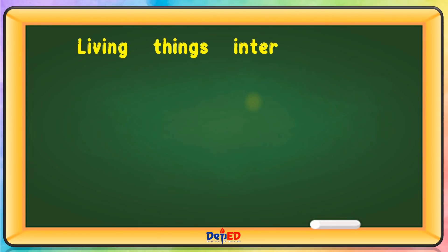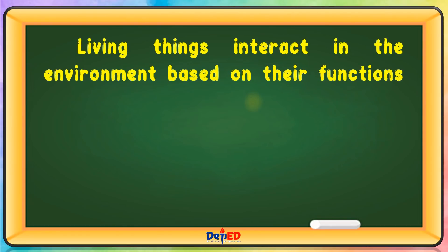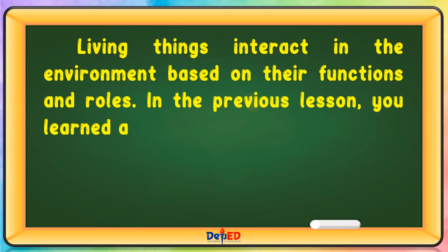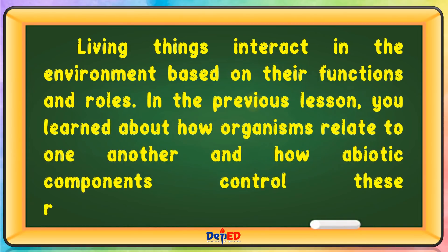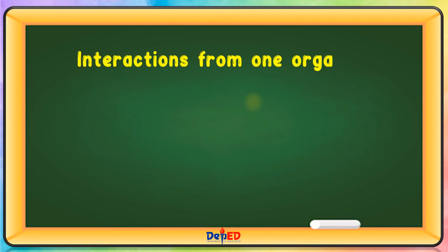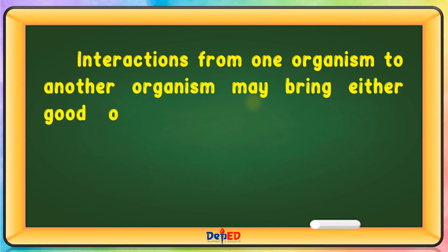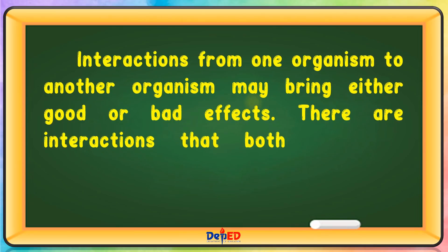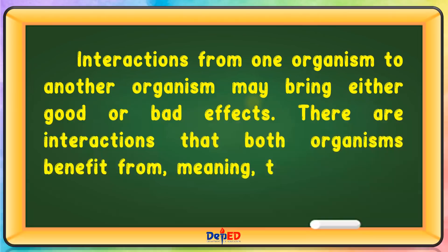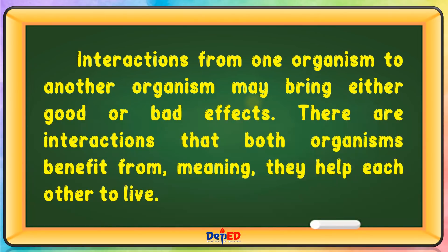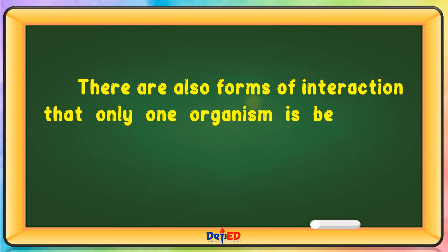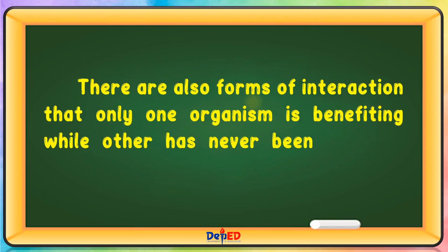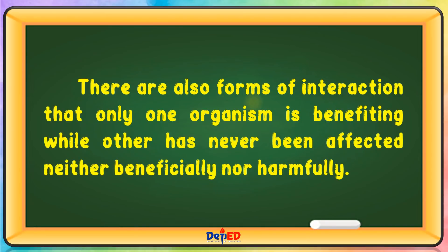Living things interact in the environment based on their functions and roles. In the previous lesson, you learned about how organisms relate to one another and how abiotic components control these relationships. Interactions from one organism to another may bring either good or bad effects. There are interactions that both organisms benefit from, meaning they help each other to live. There are also forms of interaction where only one organism benefits while the other is neither benefited nor harmed.